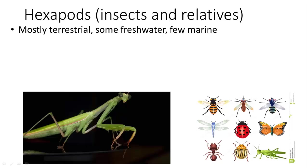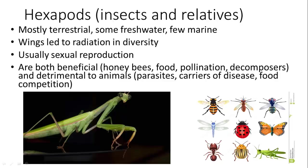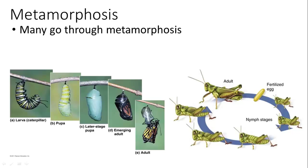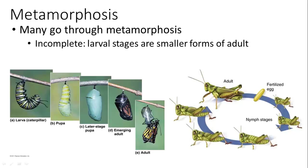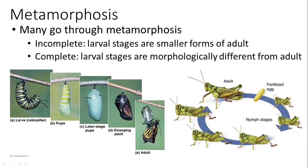Hexapods are insects and relatives, mostly terrestrial and some freshwater. Their wings have led to their evolutionary radiation. They are both beneficial and detrimental to humans — many pests are insects, but they also provide ecosystem services like pollination. Many undergo metamorphosis: incomplete metamorphosis produces smaller larvae resembling adults; complete metamorphosis produces entirely different life stages, like caterpillar to butterfly.